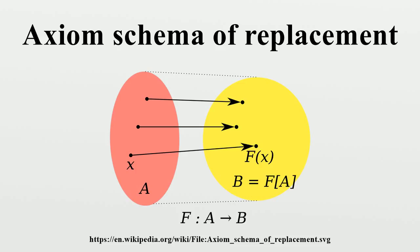It is implied by the stronger axiom of limitation of size. Because it is impossible to quantify over definable functions in first-order logic, one instance of the schema is included for each formula phi in the language of set theory with free variables among W1, ..., WN, A, X, Y, but B is not free in phi. In the formal language of set theory, the axiom schema is stated accordingly.